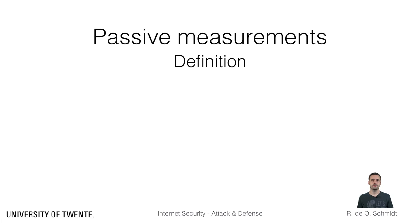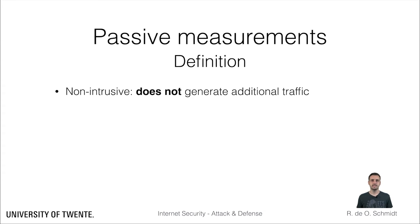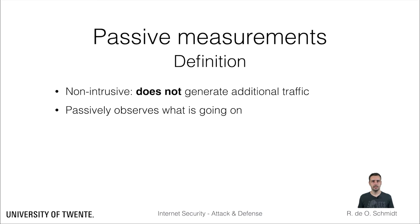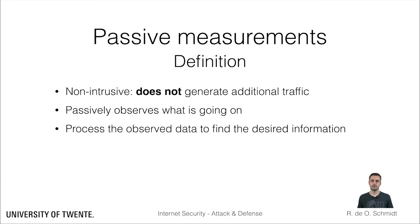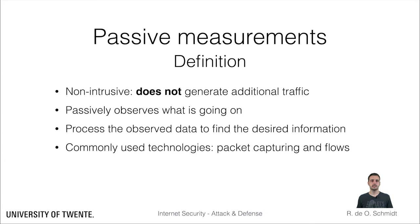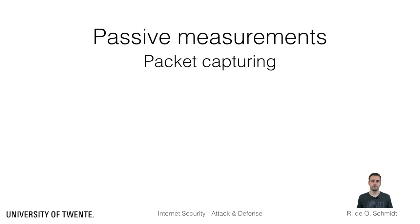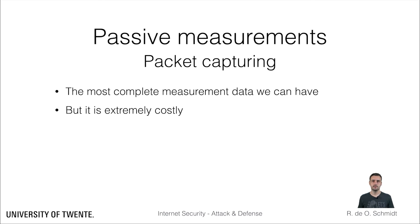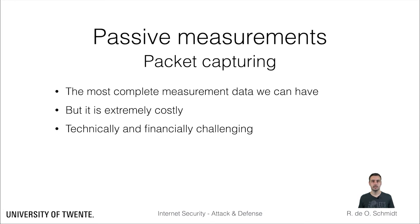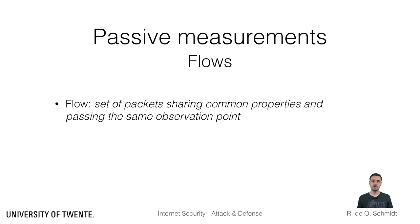An alternative to active measurement is passive measurements. Passive measurements are not intrusive — that is, there is no additional traffic generated. Measurements are done by simply observing the target. Commonly used approaches are packet capturing, using for example TCPdump, and flow measurements. Packet capturing provides us with the most complete dataset we can possibly have. However, at high-speed links and current transmission rates, capturing packets demands expensive and many times dedicated hardware and software. A good alternative to packet capturing is measuring traffic at the flow level.